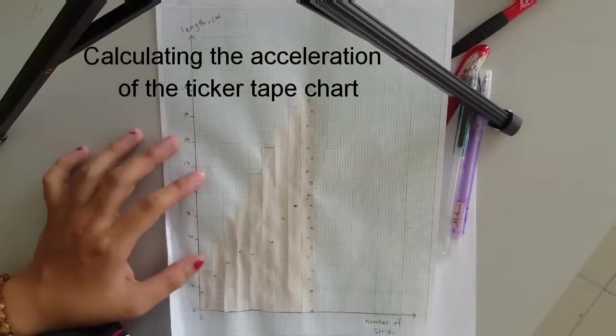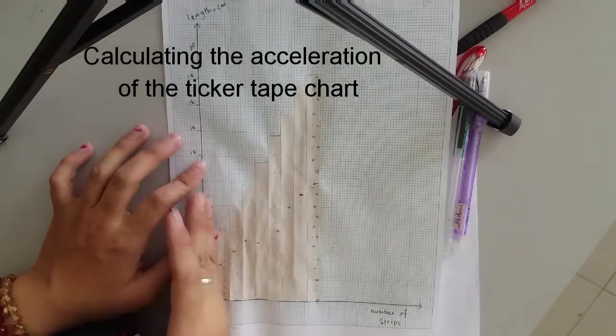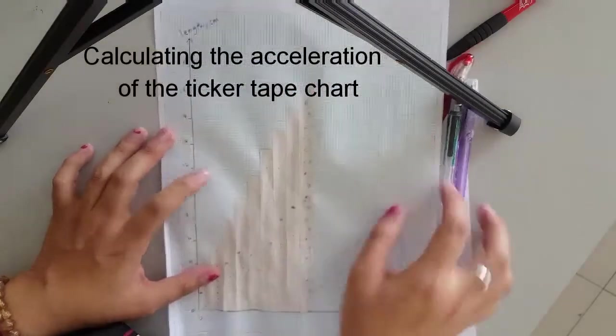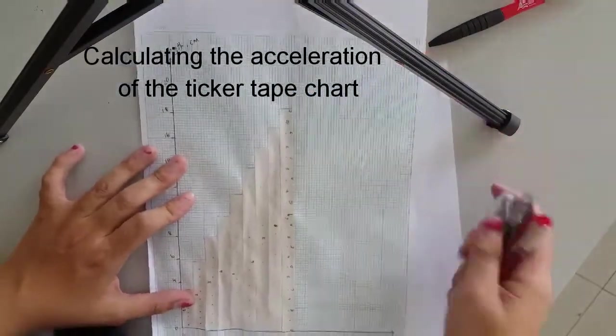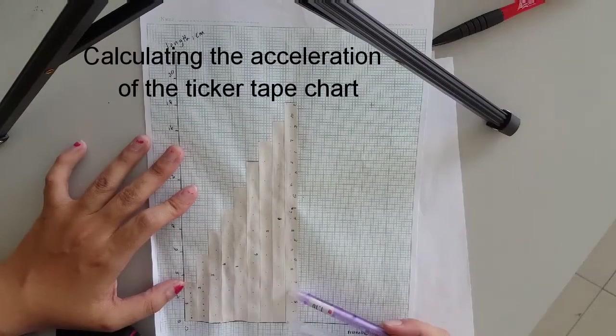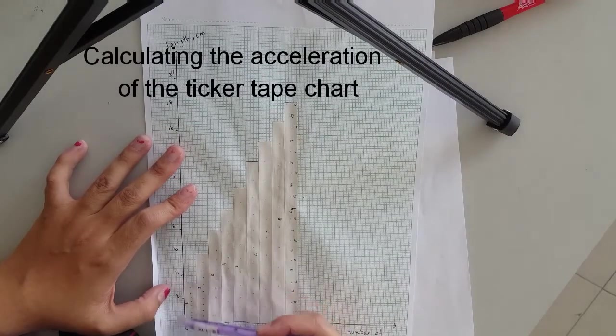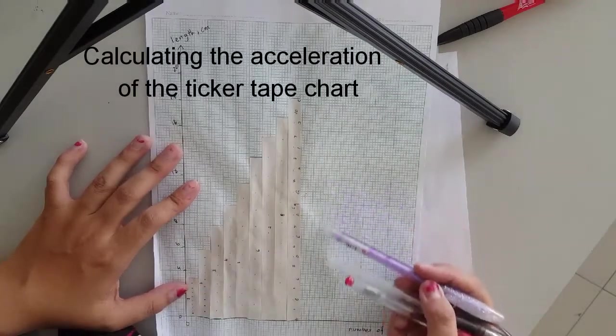This is our graph previously. So we have, this is called a ticker tape chart. So in this case we have nine strips. This is my first strip number one and this is my strip number nine.